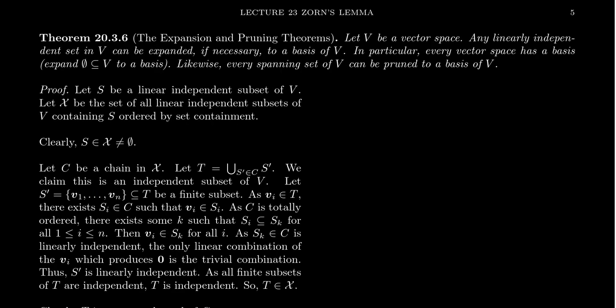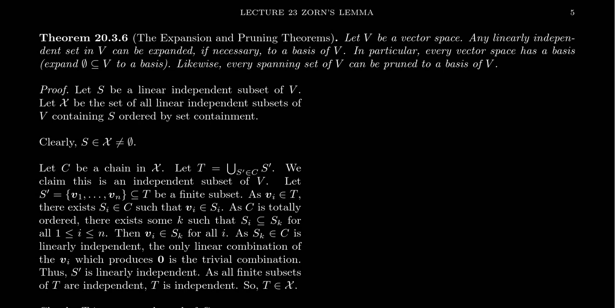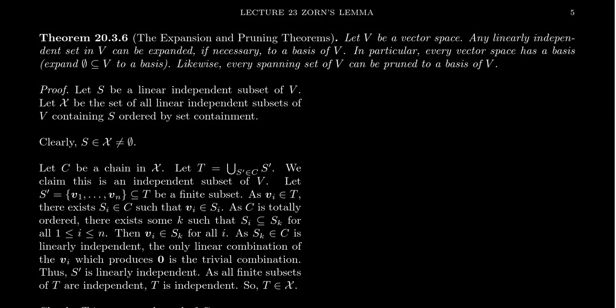I want to prove in this video the expansion and pruning theorems for a vector space. This theorem will require the use of Zorn's Lemma, which is why we presented it in the first video of lecture 23. The expansion and pruning theorems are actually two theorems. There is the expansion theorem, which we'll prove right now. The pruning theorem I'll leave as an exercise to the viewer, as its proof is strikingly similar. Let V be an arbitrary vector space over an arbitrary field. Any linearly independent set in V can be expanded, if necessary, to a basis.